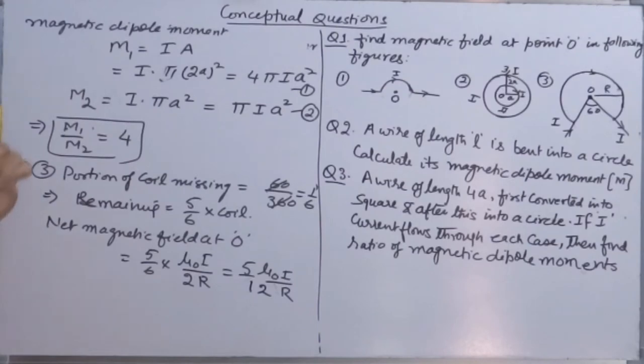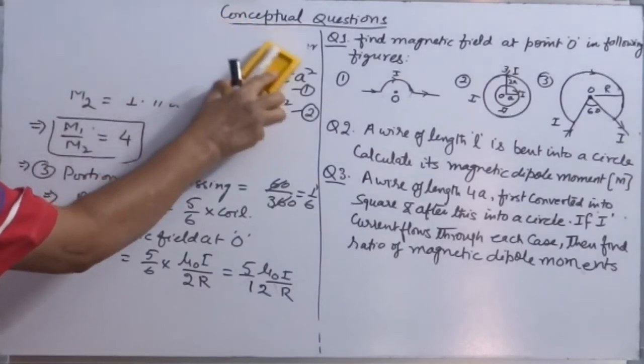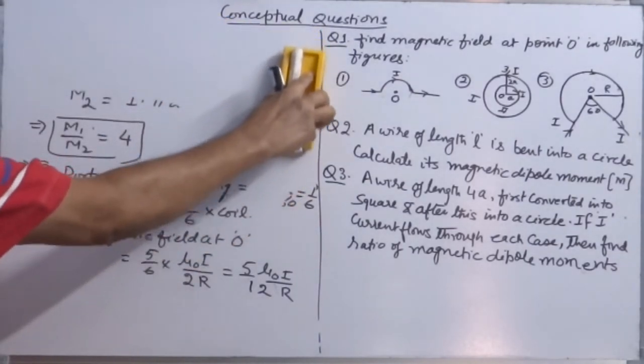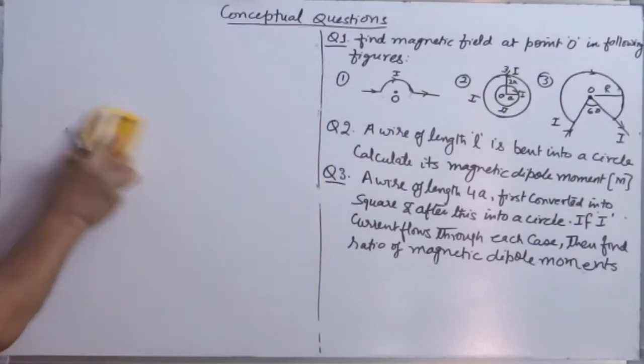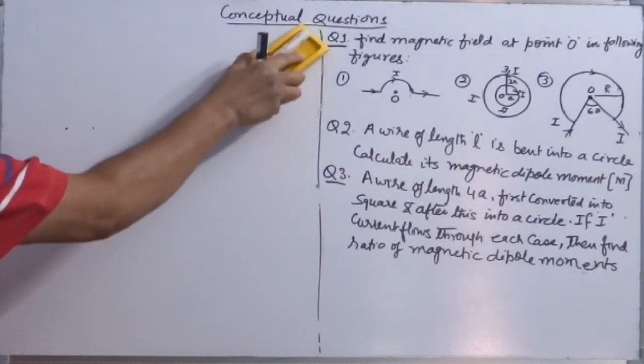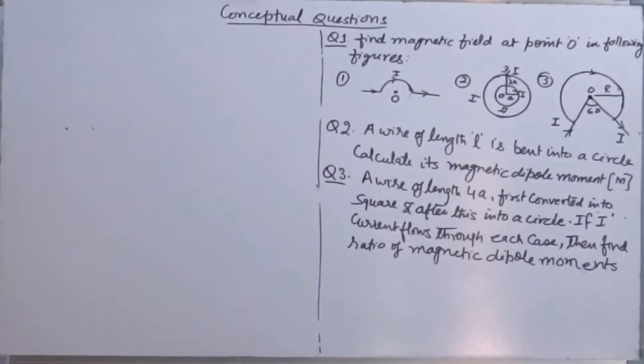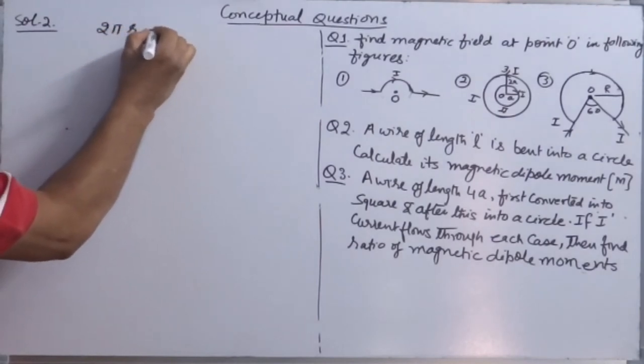Second question is: A wire of length L is bent into a circuit. Calculate magnetic dipole moment. Solution 2: Circumference is equal to L.